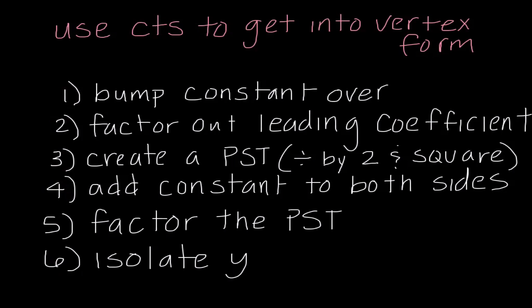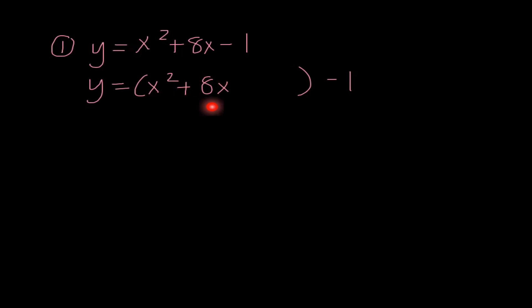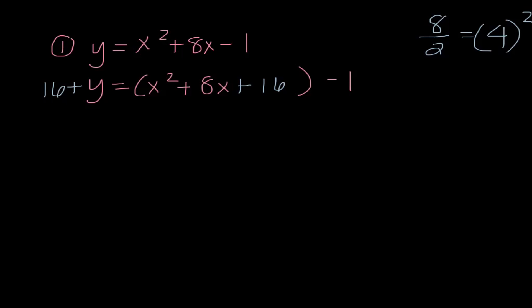Let's go back to example number one. Now that we know how to get it into vertex form, we can find all the characteristics and sketch a graph. The first thing I'm going to do is bump the constant — that negative 1 — over to the other side. Next, I need to factor out the leading coefficient, which is 1, so that doesn't change anything. We figure out what to add to make a perfect square trinomial: take the middle coefficient 8, divide by 2, and square it. So we add 16 to one side, and we must also add 16 to the other side.